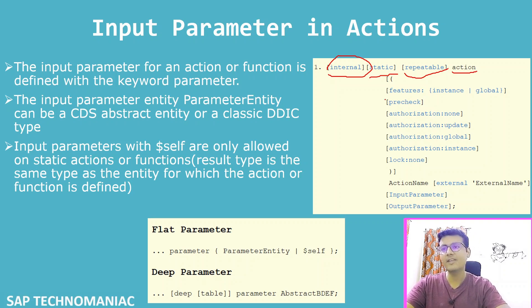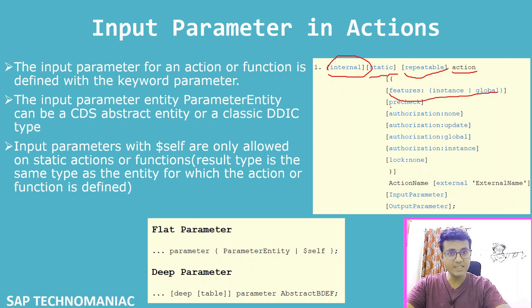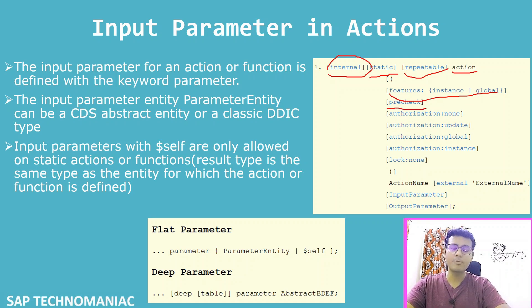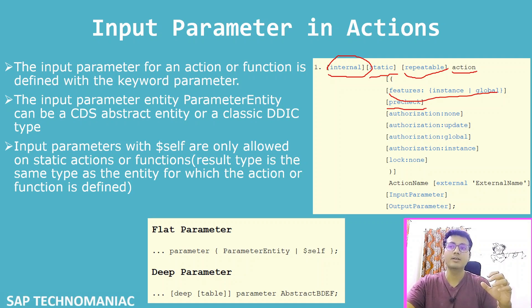If you want to define some pre-checks before triggering this action — something you want to check — you can define that using the pre-check keyword. Once you define the pre-check keyword, you have to define one pre-check method and write code there.